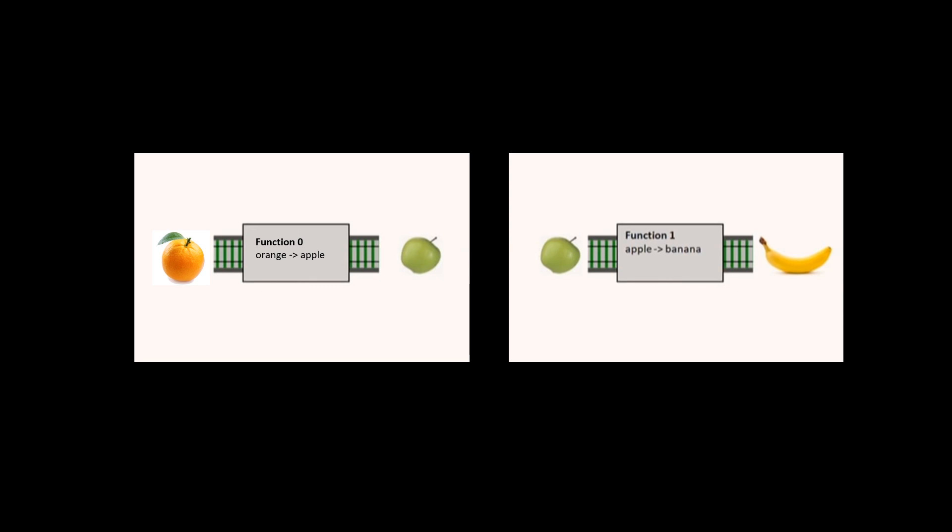But for these contravariant functors, the idea of containers, as it applies to containers like lists and sum types and product types, it doesn't work as well. And the best way to think of it is the container is a function that has an input and an output. And so a contravariant is just basically composing at the front, whereas a covariant is composing at the back.